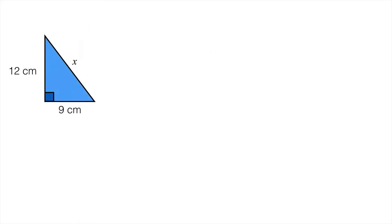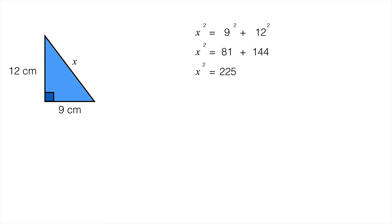On to the next example — this time I have to find the missing length X. X squared will be equal to 9 squared plus 12 squared. 9 squared is 81 and 12 squared is 144, so X squared is 225.